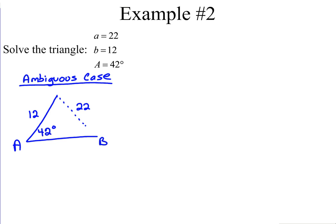Use properties of triangles: the smallest angle is across from the smallest side. Since the side opposite B is 12 and the side opposite A is 22, angle B must be smaller than angle A. There is only one way that can occur — angle B must be acute. Since angle B has to be acute, we know that exactly one triangle exists under these conditions. Go ahead and use Law of Sines to begin solving.